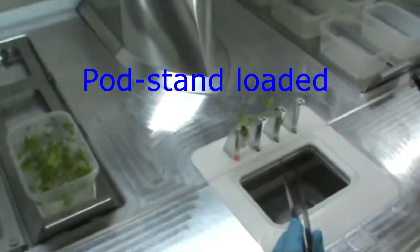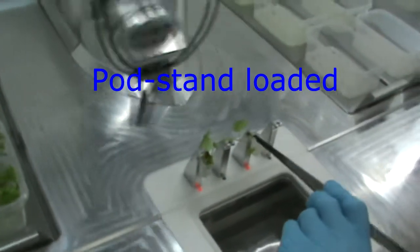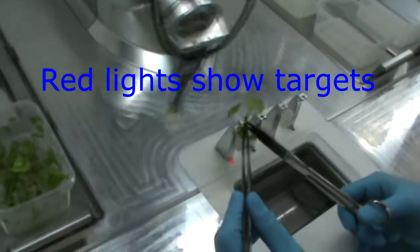Input plants are in the tray on the left with agar-filled output pods on the right. The robot uses its pneumatic grippers to load the pod stand in front of the operator.